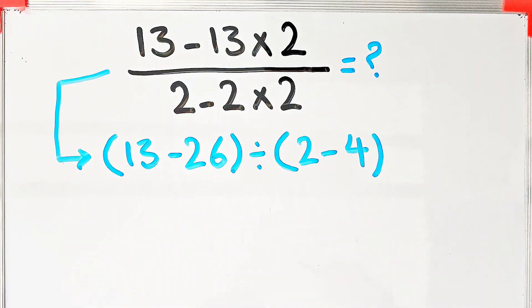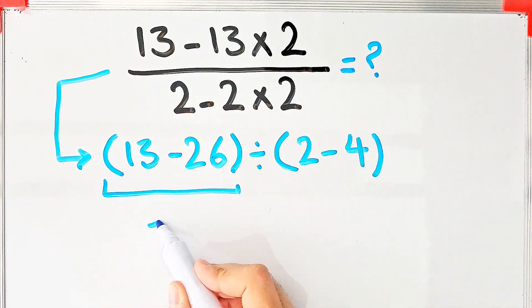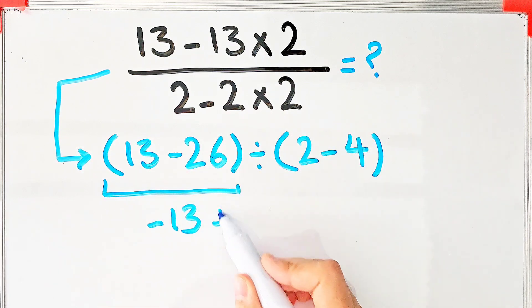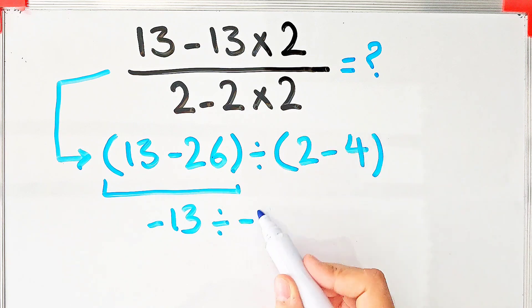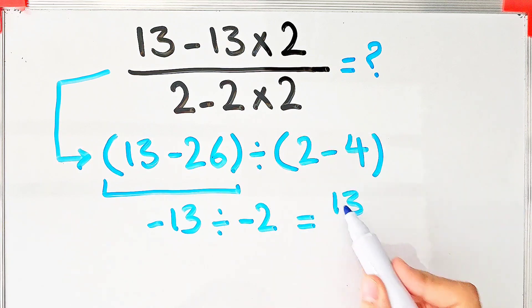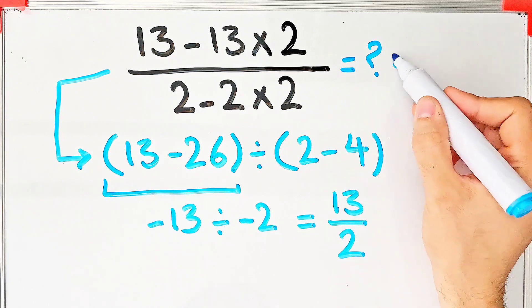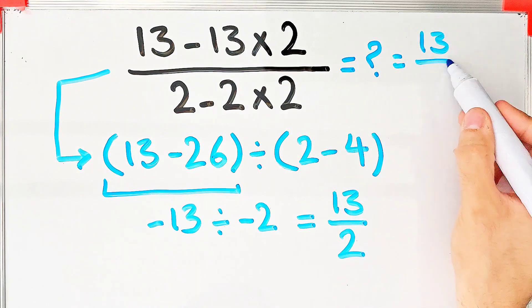13 - 26 = -13, divided by 2 - 4 = -2. The final answer of this question equals 13/2. Thanks for watching guys, please subscribe to the channel and leave a comment. Goodbye!